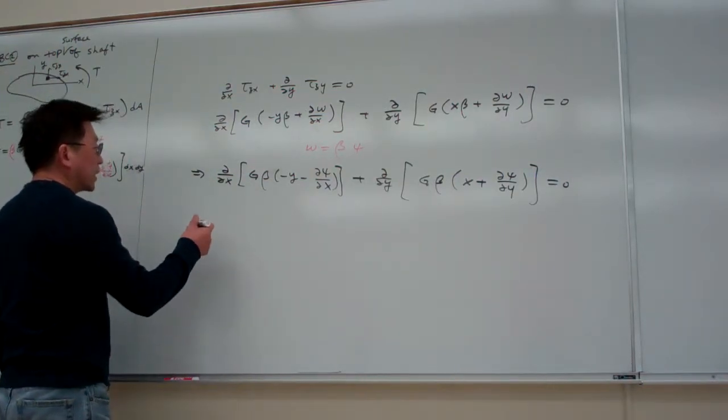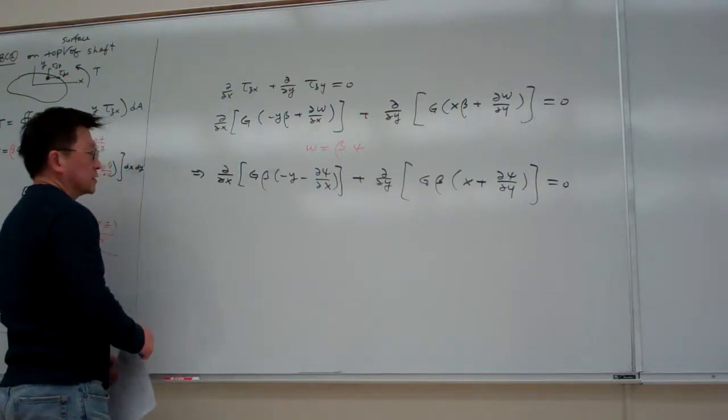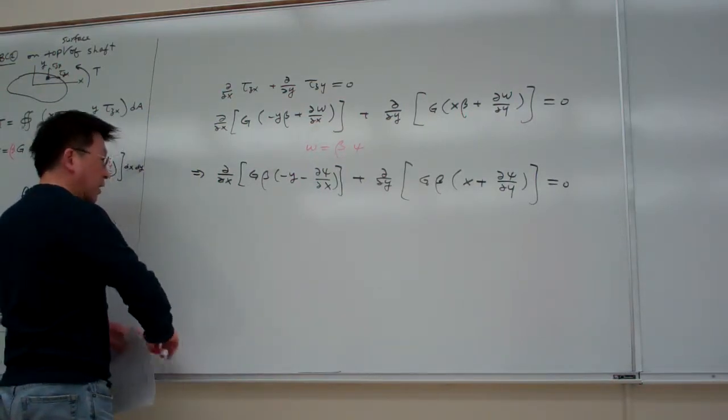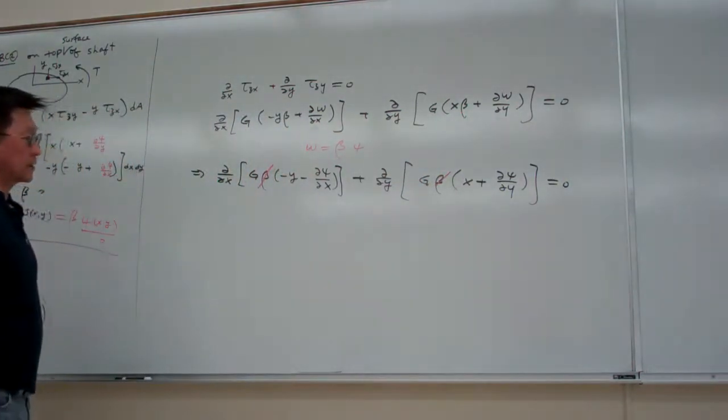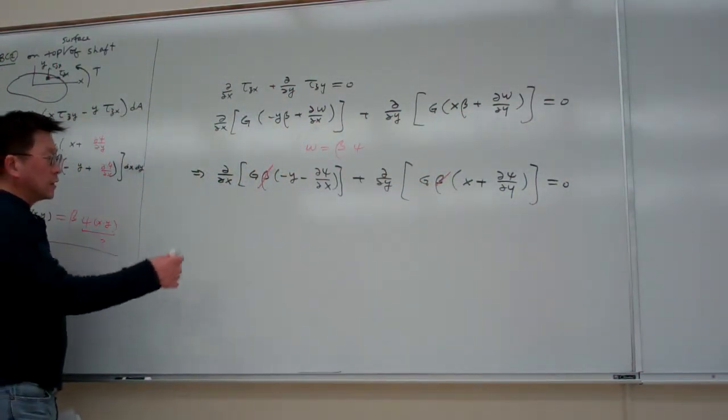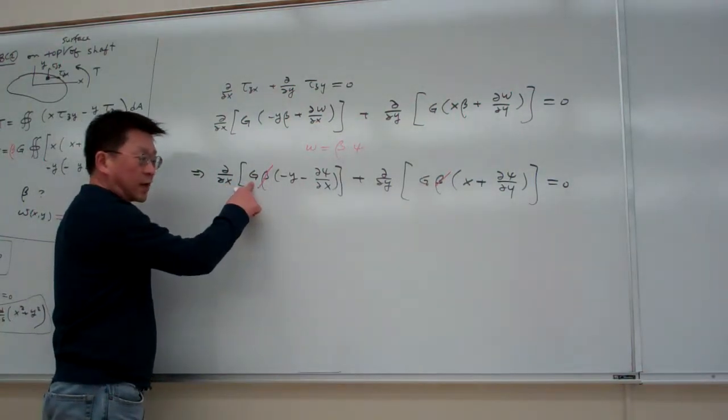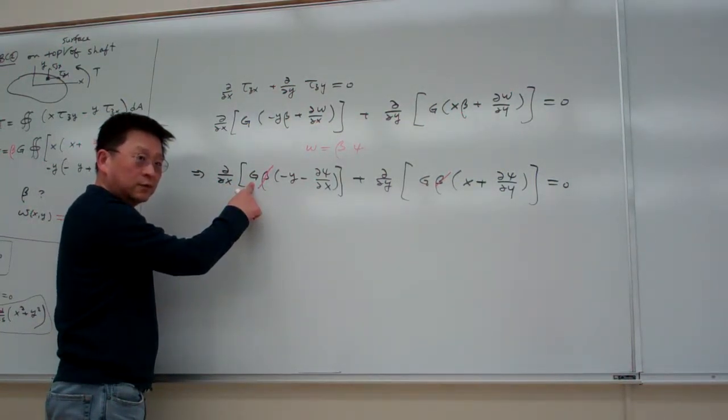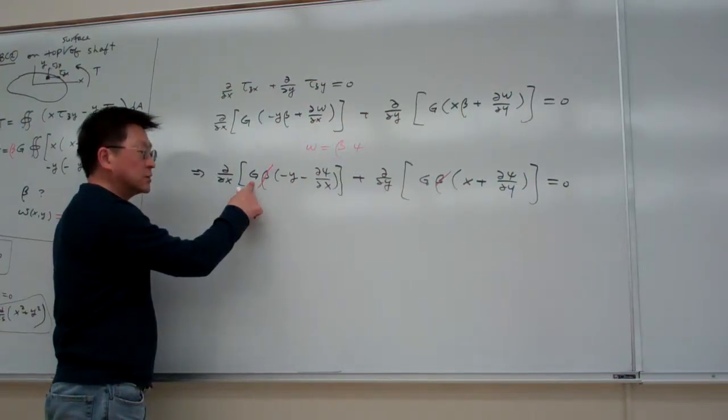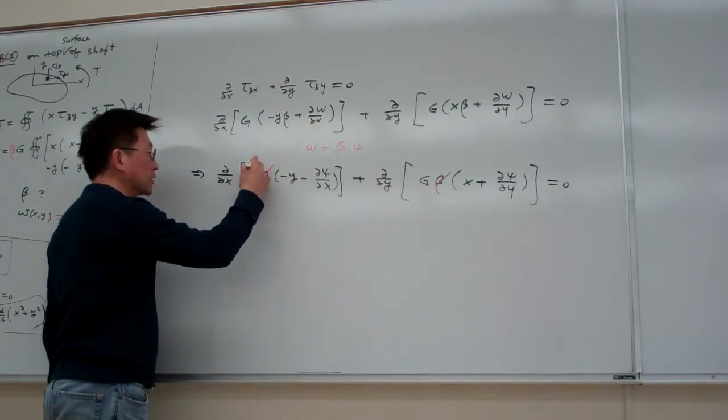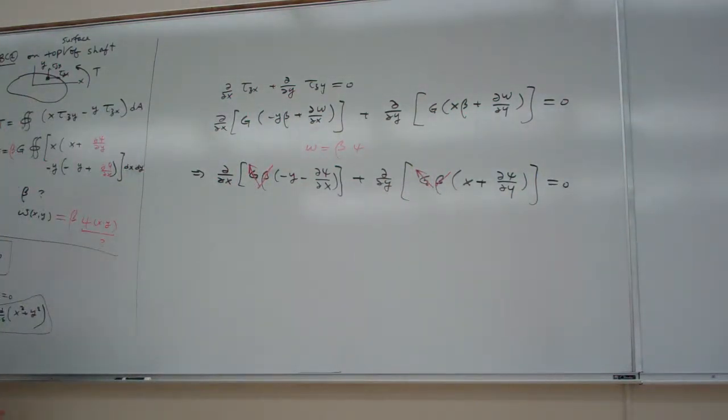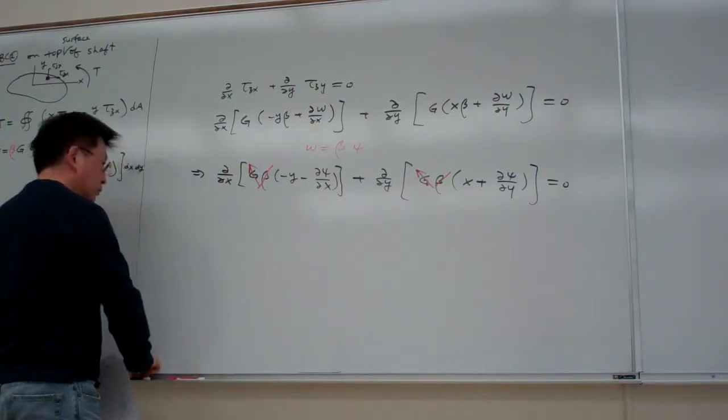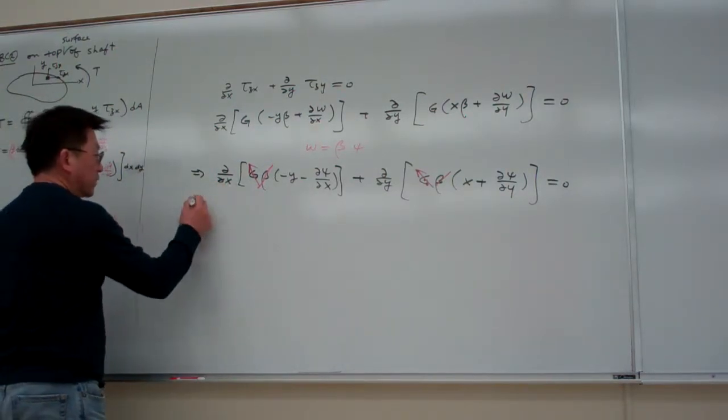So for this case, because beta is constant, so from here we can cancel, we can scale the beta from the portion side. And again, assuming if we are dealing with isotropic material, and assuming the g is isotropic, in this way we can even cancel the g from both sides. So from here, basically, we need things, and then we can simplify here.